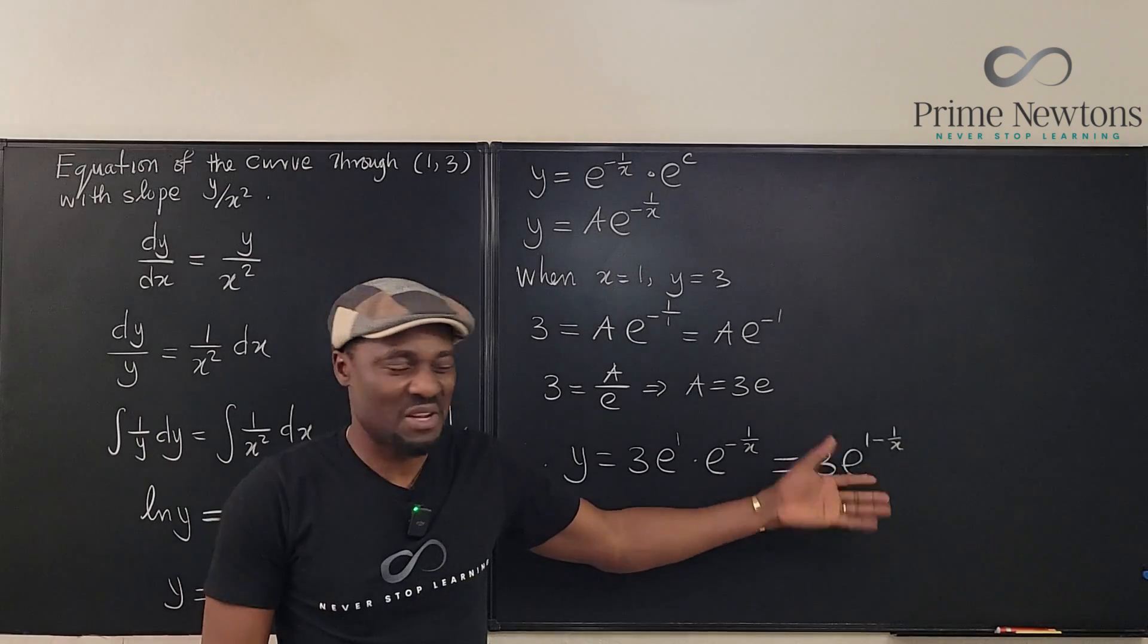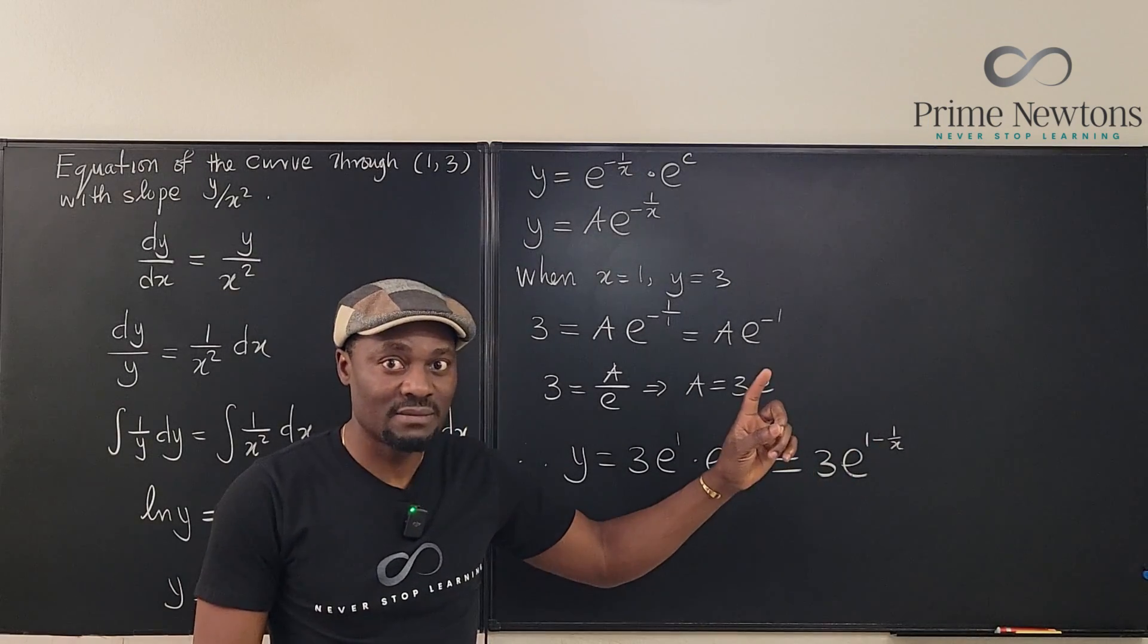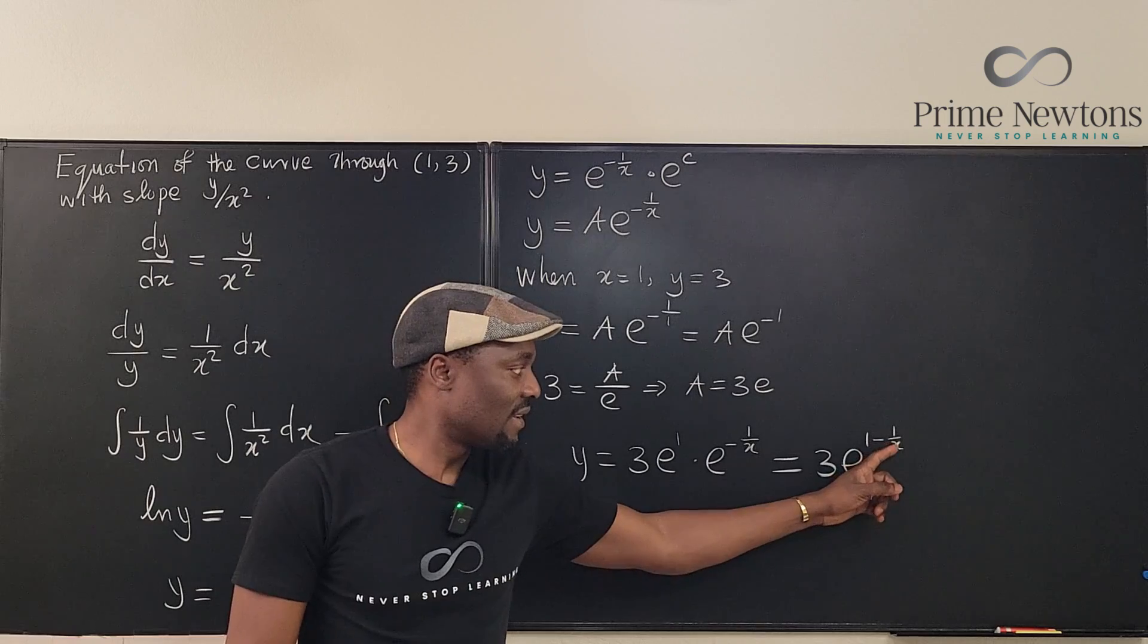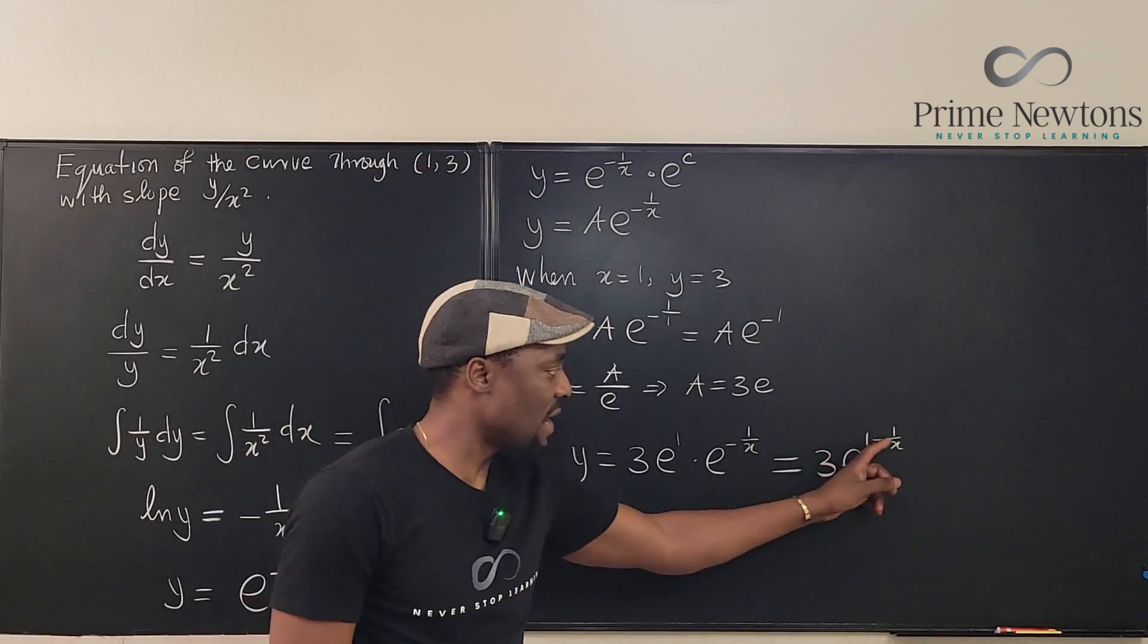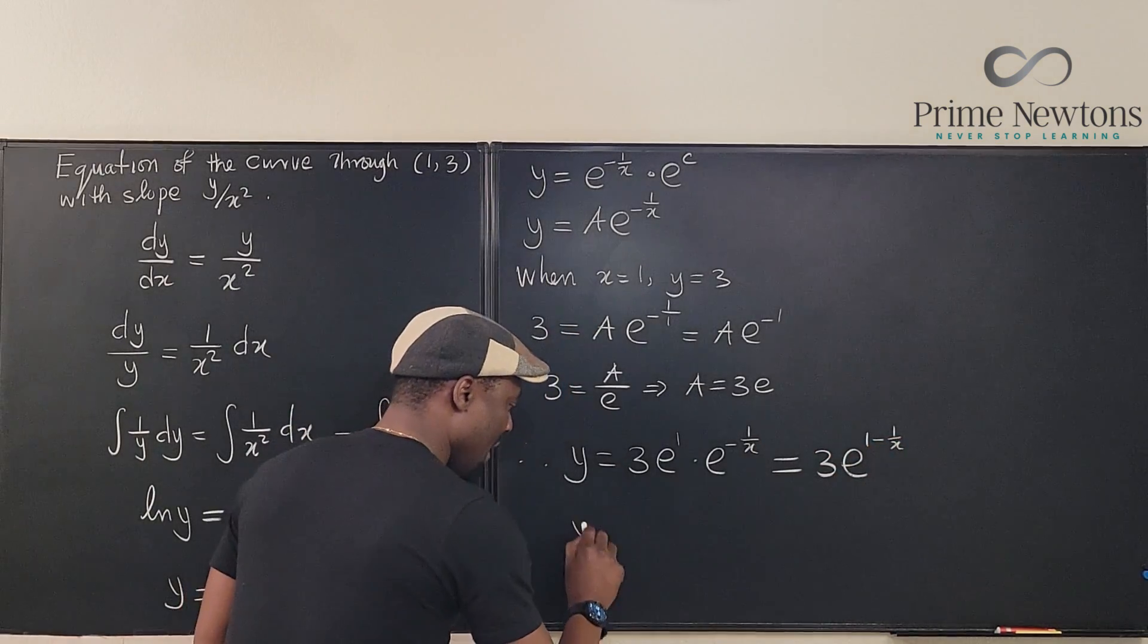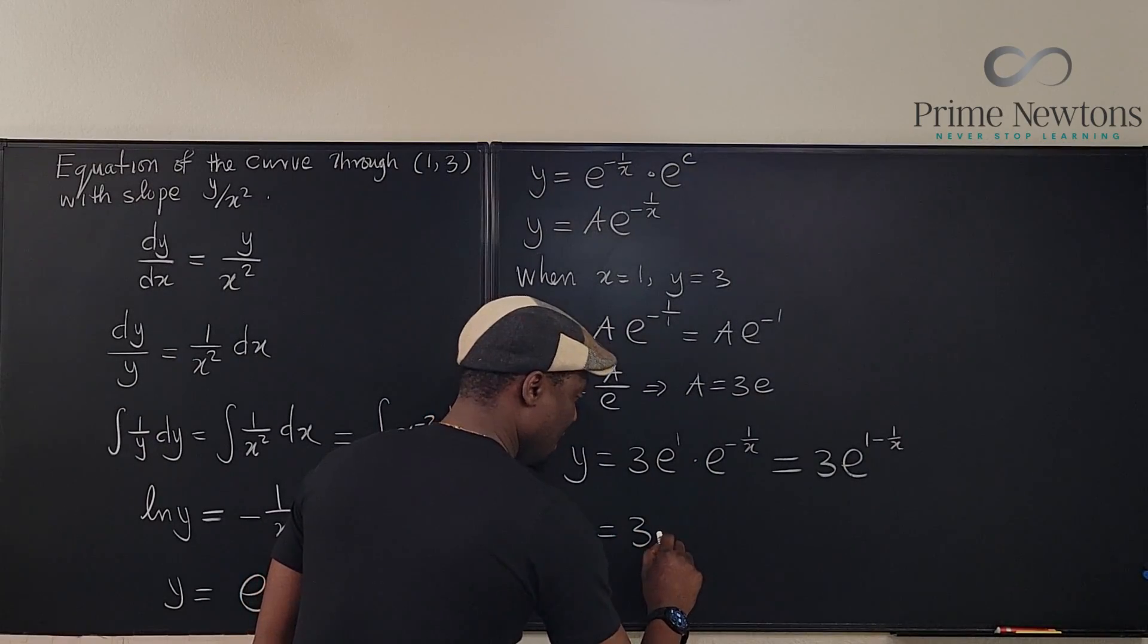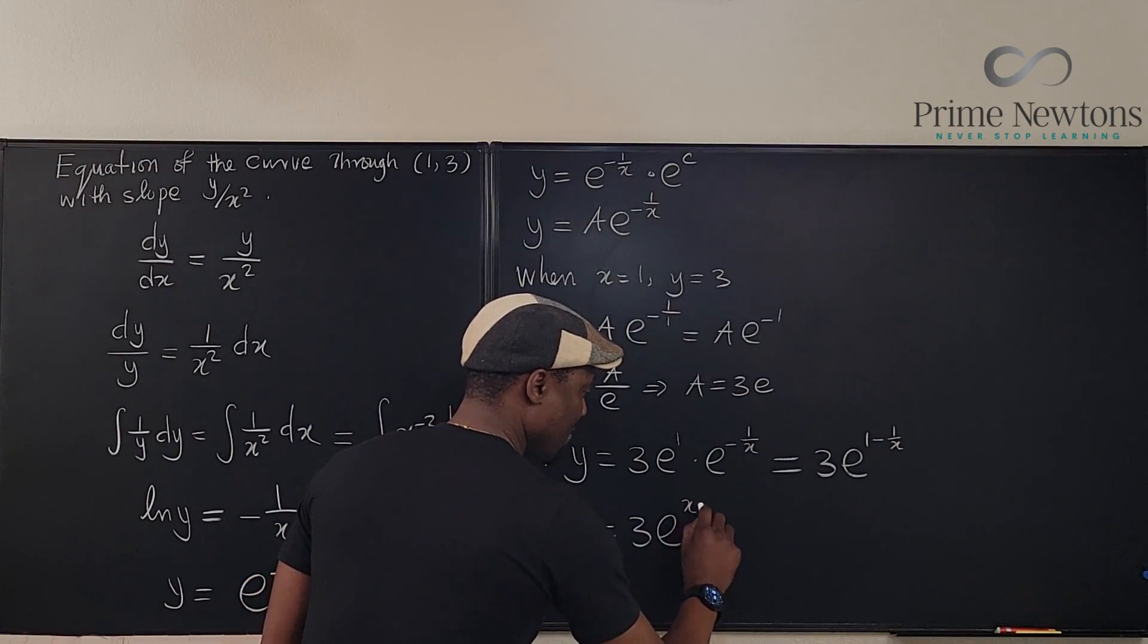should you leave your answer this way? Well, not terrible, but what I would recommend is combine everything. So, you're going to have x minus 1 over x. So, I got y equals 3e to the x minus 1 over x.